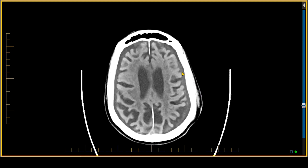Remember that as the hematomas age, they get less and less dense. Therefore, these low-density collections that can be seen here are likely weeks to months old.